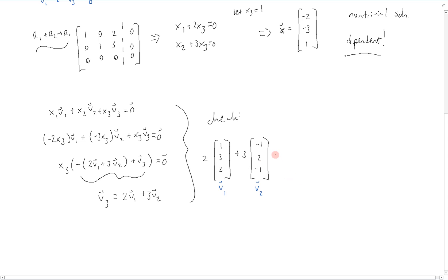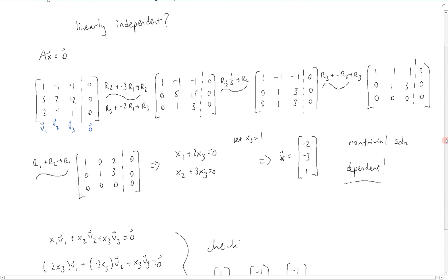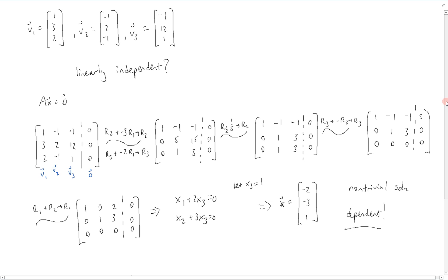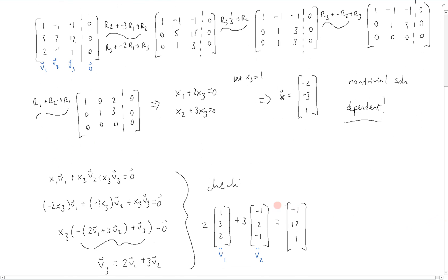And that is going to equal, if we just multiply things out, 2 minus 3 is negative 1, 6 plus 6 is 12, and 4 minus 3 is 1. And if we look at what we had before, that is exactly v3. So therefore, the linear dependence relation that we found right here holds.